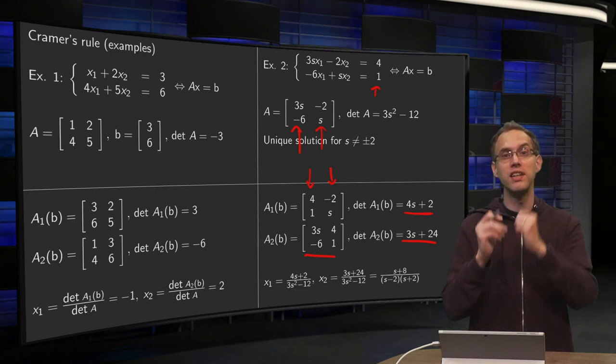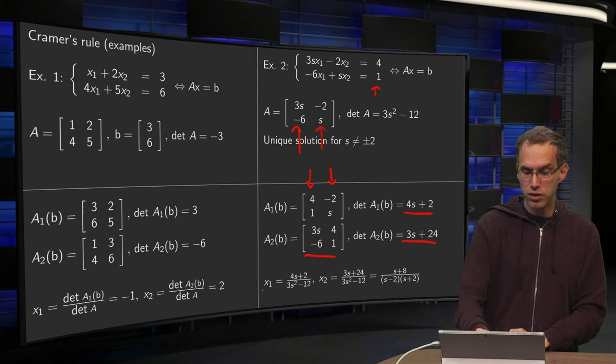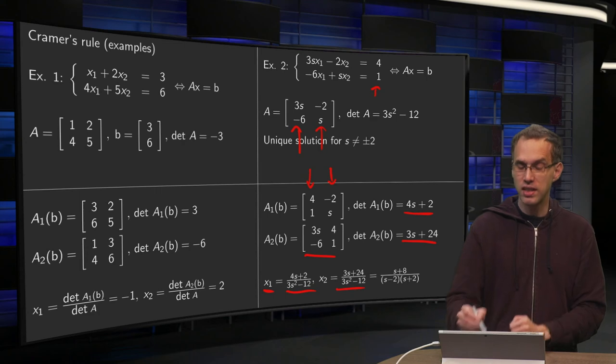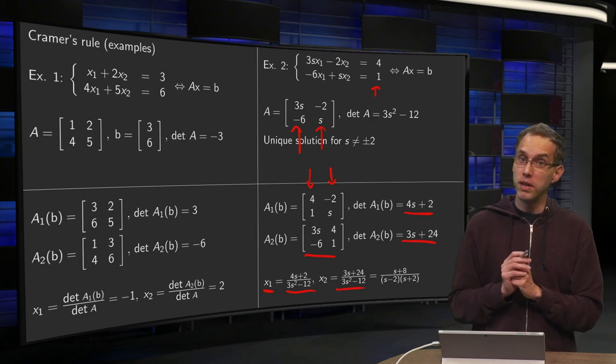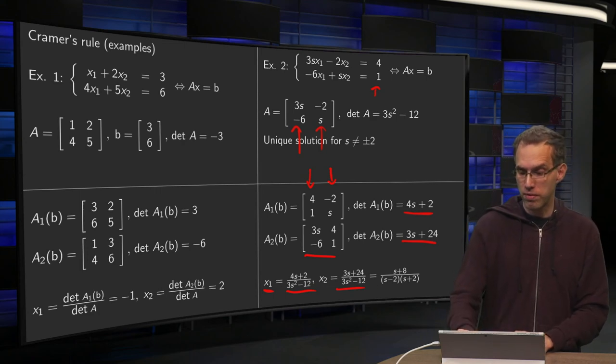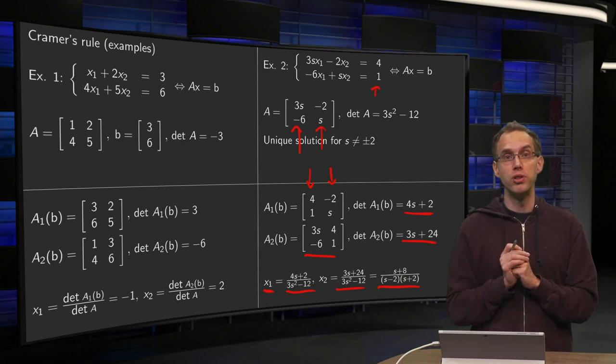And then we can find immediately our solution. x1 equals det A1(b) over det A. And x2 equals det A2(b) over det A, which can be simplified slightly. So there you have your solution.